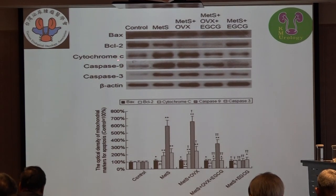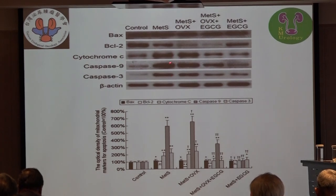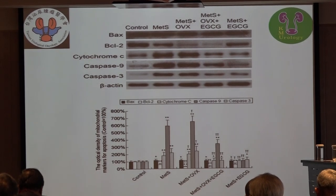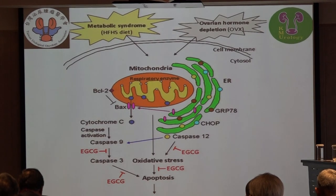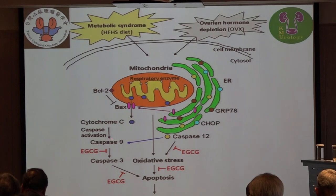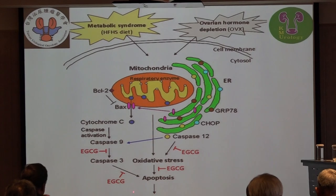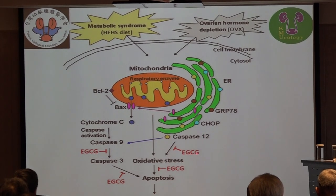The apoptosis-related proteins cytochrome C, caspase-9, and caspase-3 increased in metabolic syndrome with and without ovariectomy, but decreased after EGCG treatment. The proposed mechanism is that metabolic syndrome combined with ovarian hormone deficiency induces mitochondria to release cytochrome C, activating caspase-9 and caspase-3, inducing apoptosis, resulting in greater bladder hyperactivity. EGCG treatment can decrease both the ER pathway and the mitochondria apoptosis pathway.